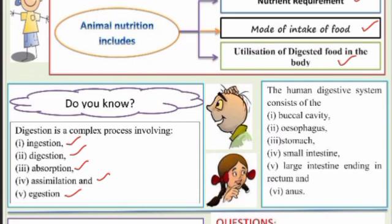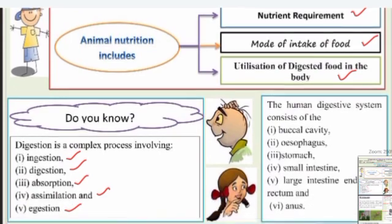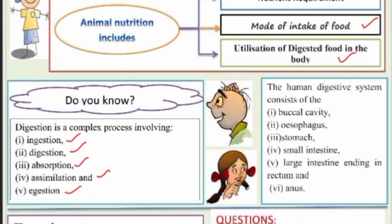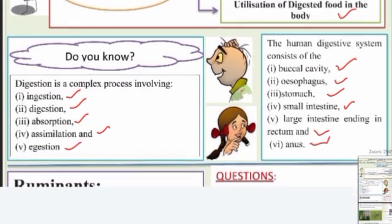The human digestive system consists of the buccal cavity, oesophagus, stomach, small intestine, and large intestine, ending in the rectum and anus. So the digestive system consists of five parts.